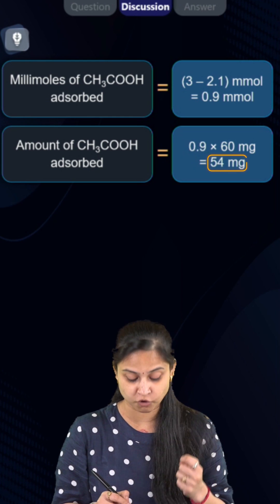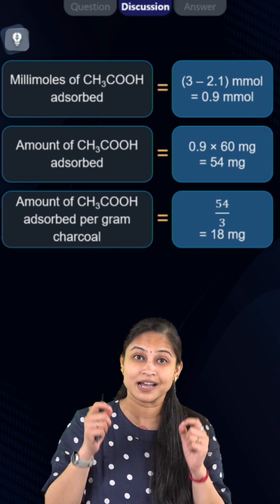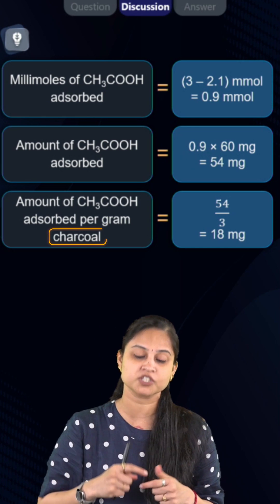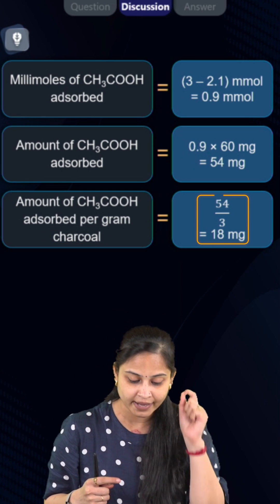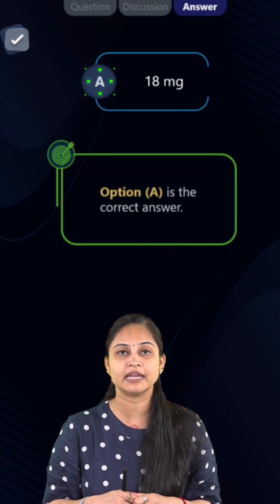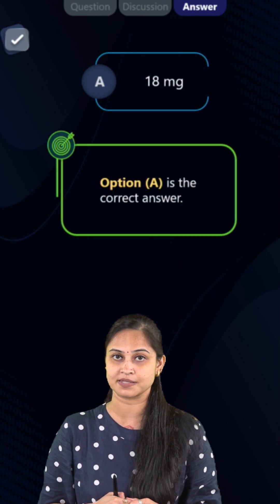Talking about the last conclusion point: amount of acetic acid adsorbed per gram of the charcoal will be equals to 54 divided by 3, which comes out to be 18 milligrams. Hence, our option number A, 18 milligrams, is absolutely the right answer.